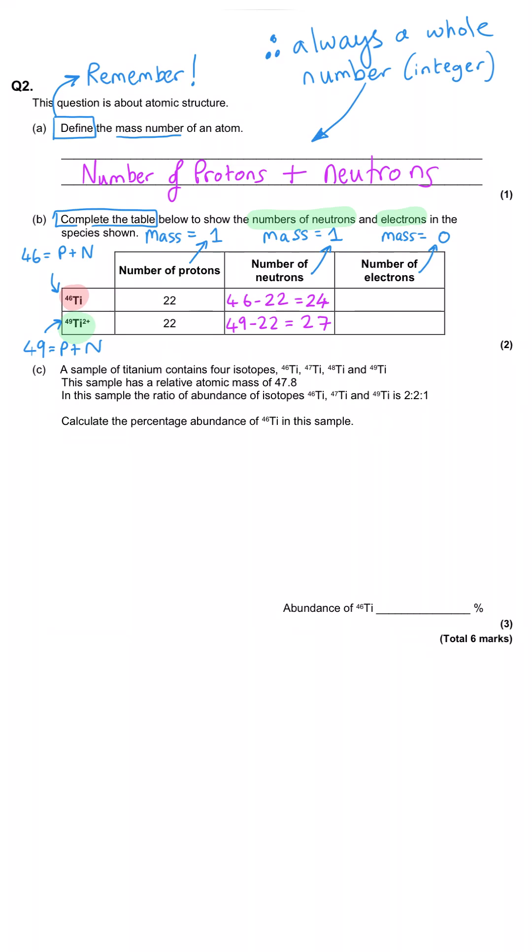And then the electrons. Well, for atoms, the number of electrons is the same as the number of protons. You can see that the first titanium has got no charge. So equal numbers of protons and electrons, so 22.